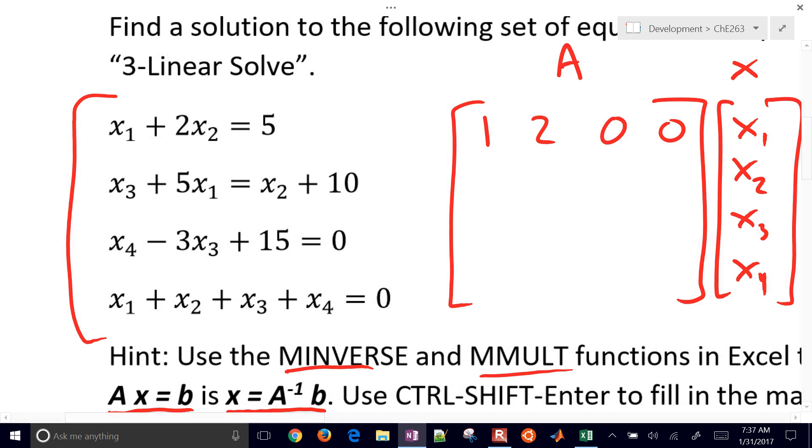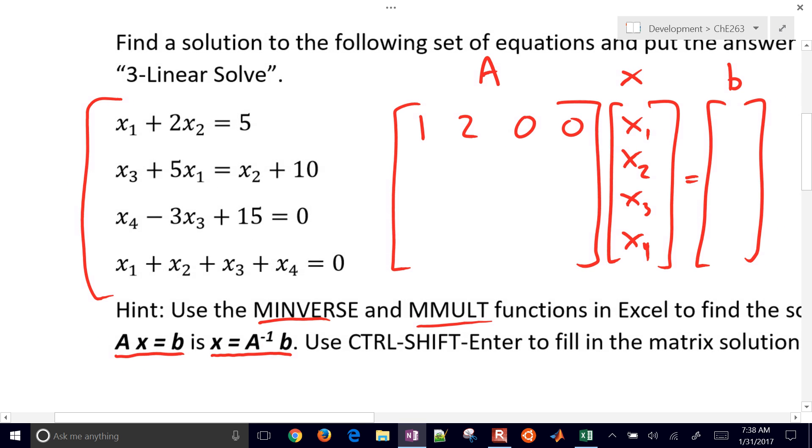Let's just go ahead and fill the rest of these in. Let's see, this one's a little bit tricky. We've just got to put the five here. We're going to move this one to the left-hand side, so it's going to be negative X2. And then we're going to have a positive X1 and then a zero.